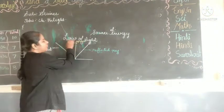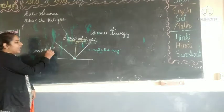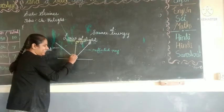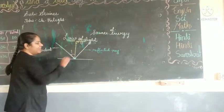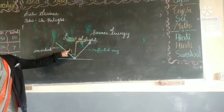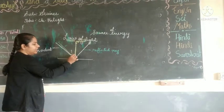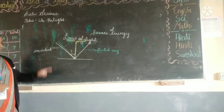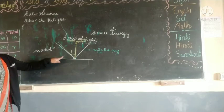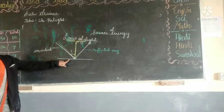Now what is the law of reflection? The angle between the incident ray and the normal is called the angle of incidence. He donon ke beech me jo angle rehta hai, that we are calling it as angle of incidence. That means the angle between the incident ray and the normal is called angle of incidence.